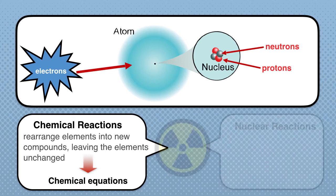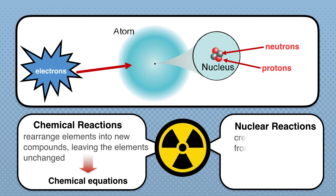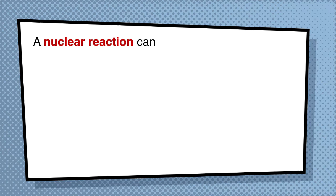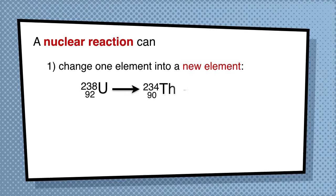Now we're going to look at a nuclear reaction. In a nuclear reaction, we're going to be able to create new elements from existing elements, and we can write a nuclear equation. We can do one of two things: we can either change one element into another element. For example, we're going to have uranium-238, and the top number is used to distinguish which isotope it is.